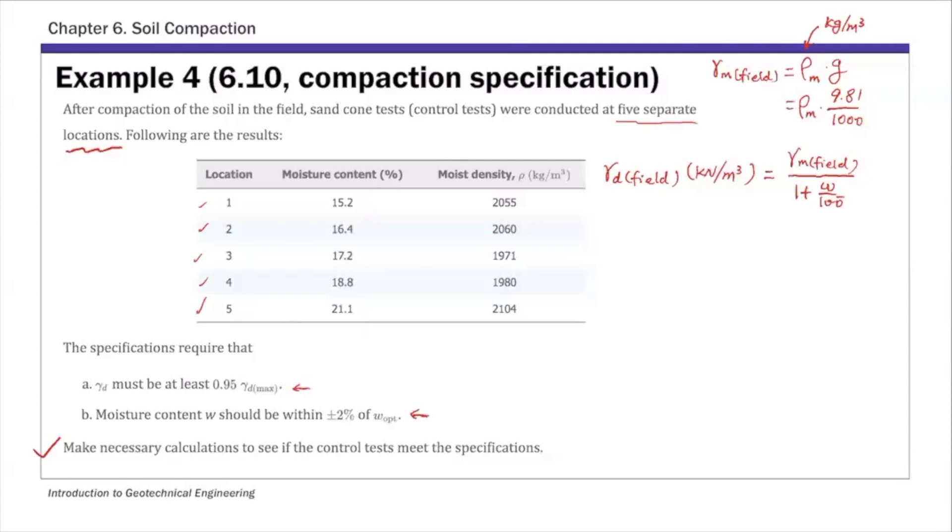So that's, this is basically rho m. So again, this is basically example one we did today. So that's the dry unit weight from sand cone methods. And then we're going to determine if these five numbers meet these two specifications. So they need to be 95% of gamma d max and also within that moisture content range.